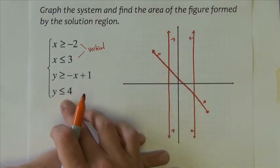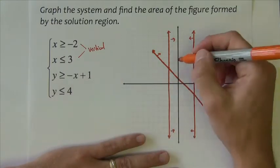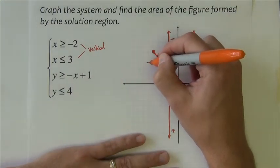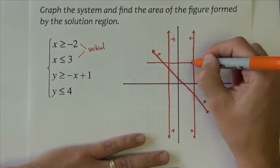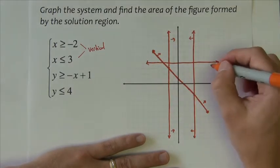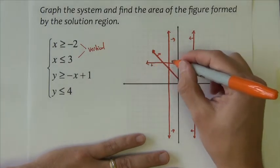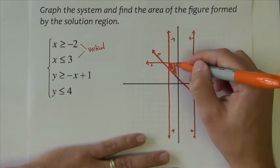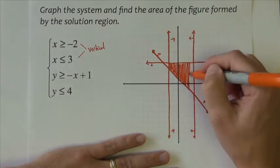Finally, I have y is less than or equal to 4. That's a horizontal line at 4. I want everything below this line, which is there. So I want this region.